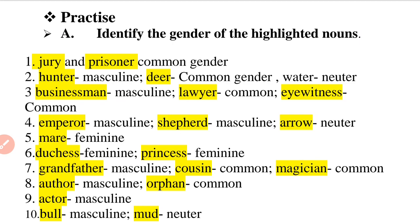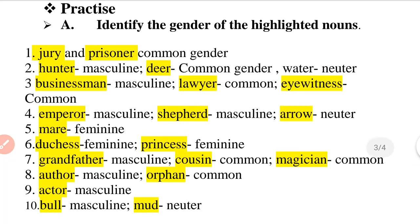Let's begin from Chapter 2, page number 18, Practice question number A. The first question is: 'The jury declared its verdict and the prisoner was proved guilty.' There are two highlighted nouns: jury and prisoner. Both jury and prisoner are common gender.